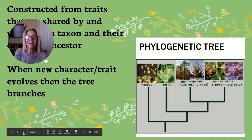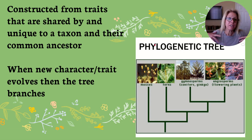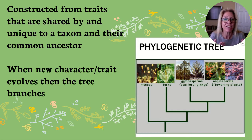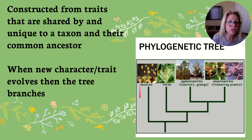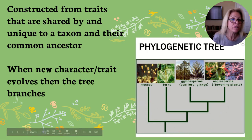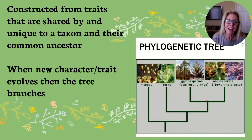When we look at phylogenetic trees, we're really just trying to create a picture to show ancestry — who evolved from whom. A phylogenetic tree is constructed from traits that are shared by all the species, and then unique traits like flowering for angiosperms. Every time a new trait evolves, you're going to have a split at a node, and this would be a speciation event.